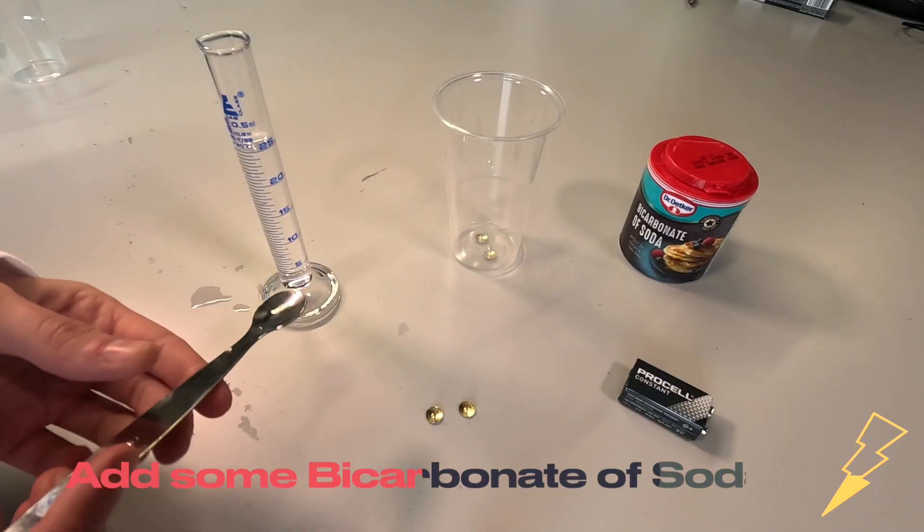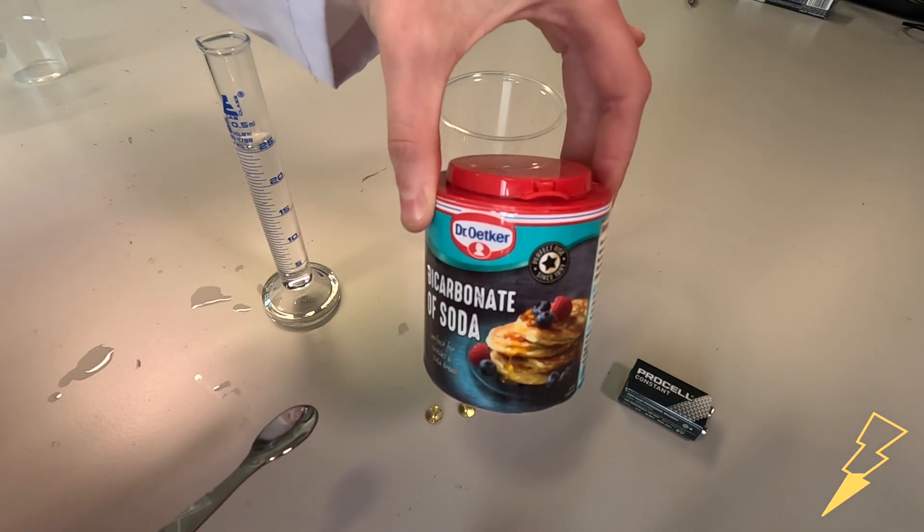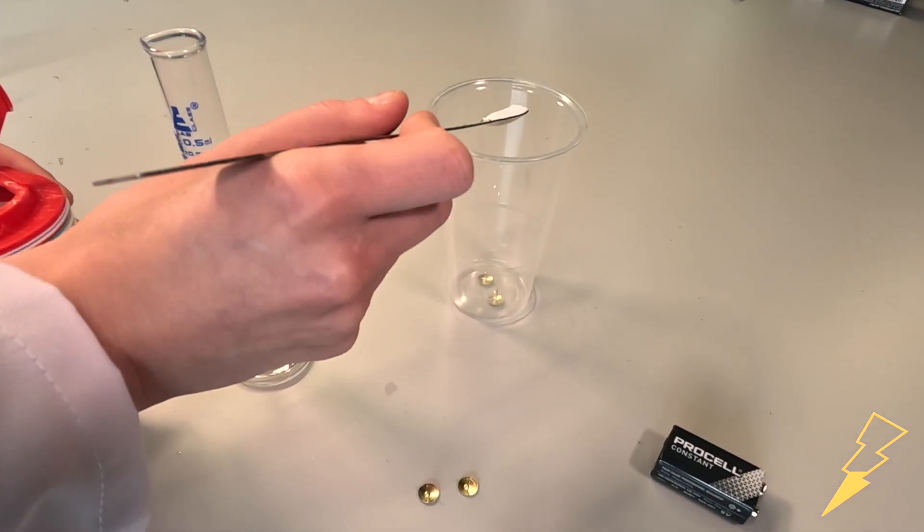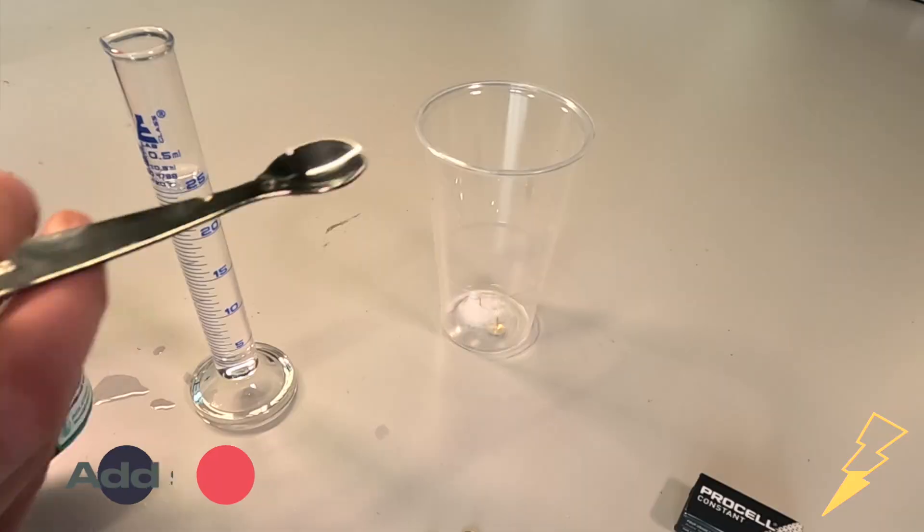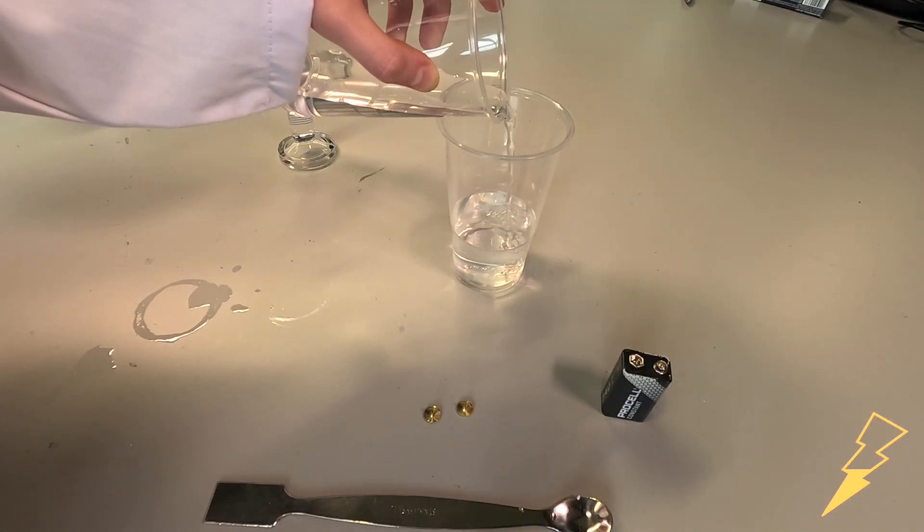The next step is taking your spatula or spoon and your bicarbonate of soda and add the bicarb, about a teaspoonful. The next step will be to add some water to the bubble machine.